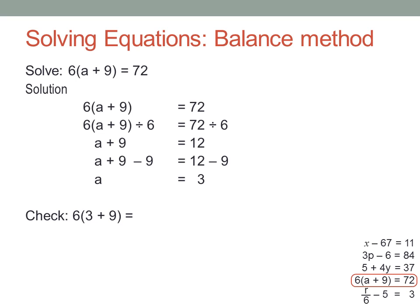Again, check the answer by substituting it back into the original equation. Careful, do the brackets first. 3 plus 9 is 12, and 6 times 12 is 72.